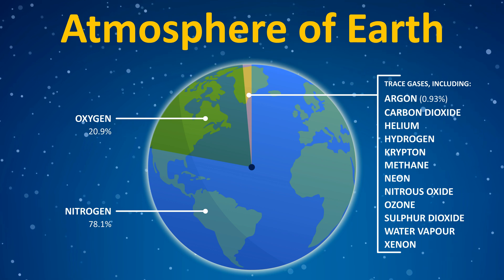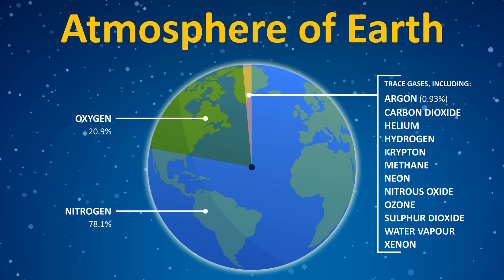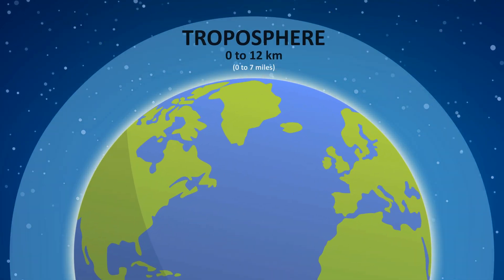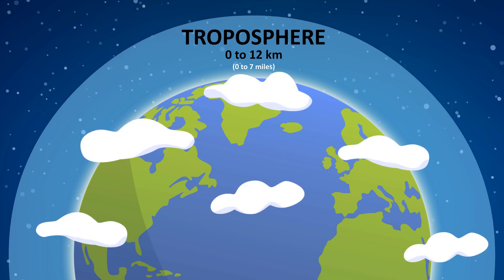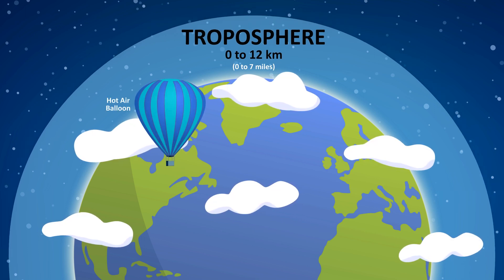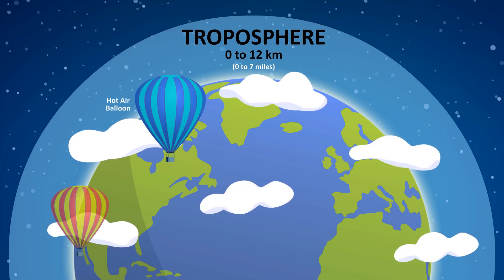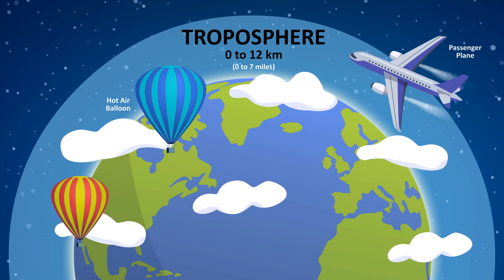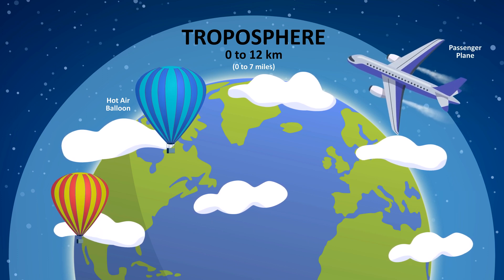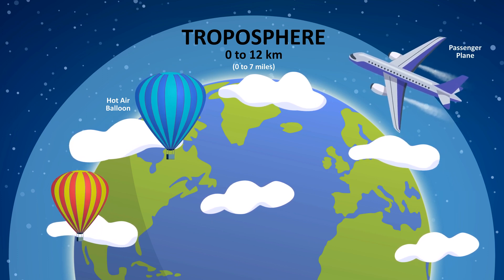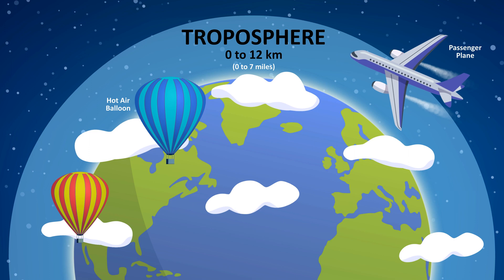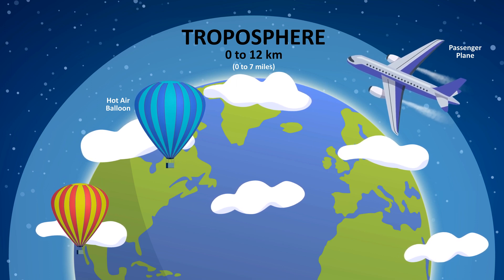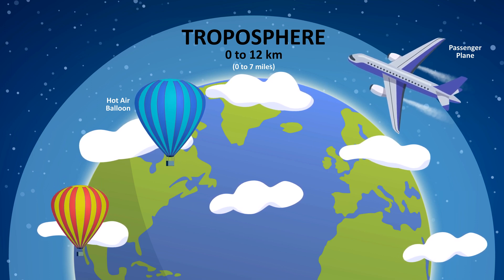Let's look at each layer from closest to farthest from the Earth. Troposphere: the layer of the atmosphere closest to the Earth is the troposphere. It begins at the surface of the Earth and extends out to about 12 kilometers. This layer is known as the lower atmosphere.